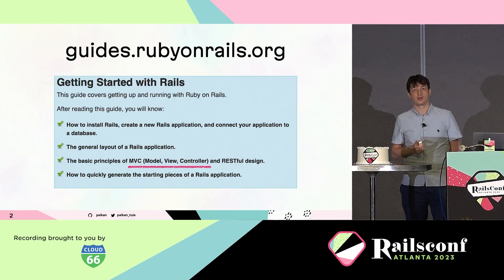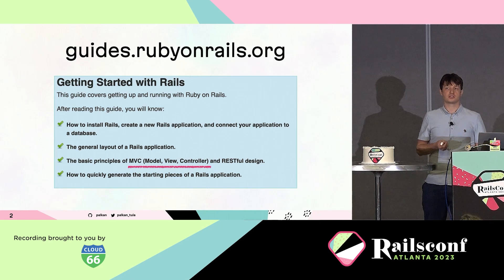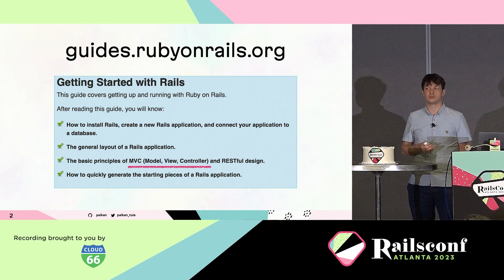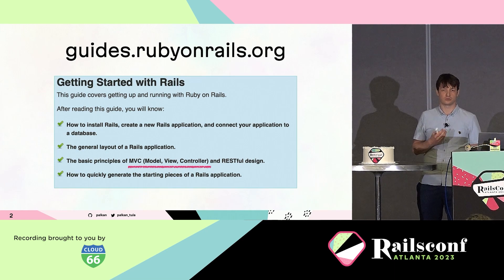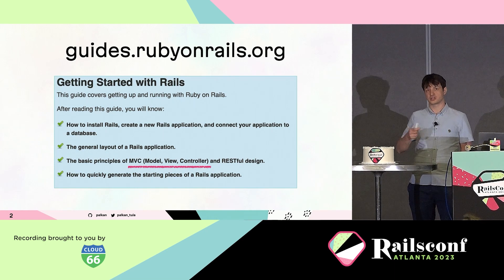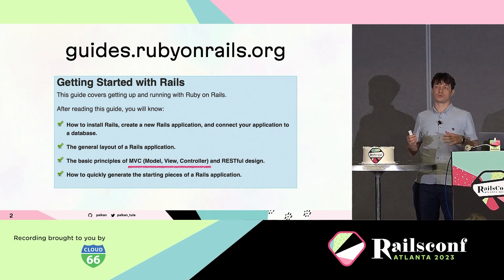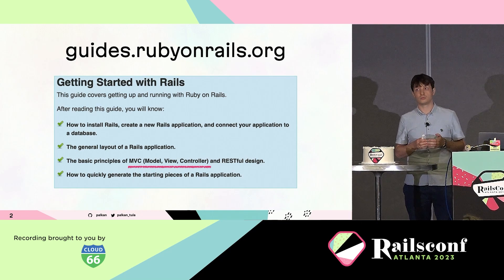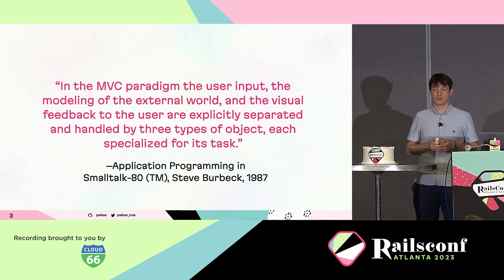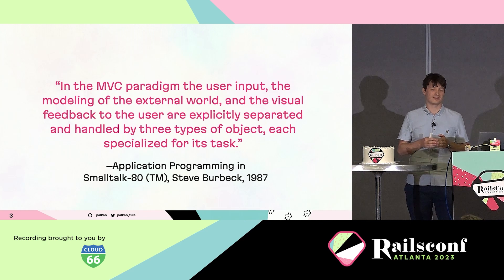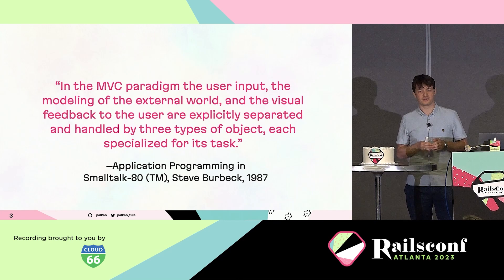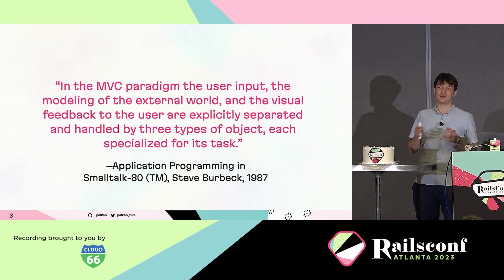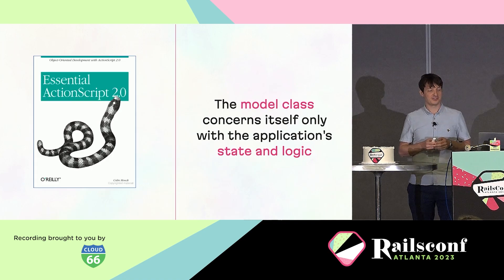So what do we know about Rails architecture? Straight from the guides, we can see that Rails follows MVC — Model View Controller — principles, and that's the core design principle of the framework. What is MVC? Let's quickly recall what the goal of MVC is. The idea came back from the 70s and 80s from the Smalltalk world.